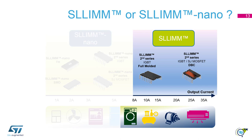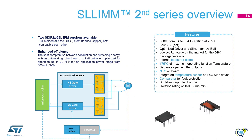Let's now jump to the SLIMn second series. The block diagram on the left side shows that we have two triple gate drivers driving the power stage. We have again the open emitter connection, which allows three-shunt current sensing. Protection features are available like NTC or temperature sensor and a shutdown input. The SLIMn second series has a breakdown voltage of up to 1.5 kV. Two different SDIP packages are available: full molded or direct bond copper DBC, compatible with each other.